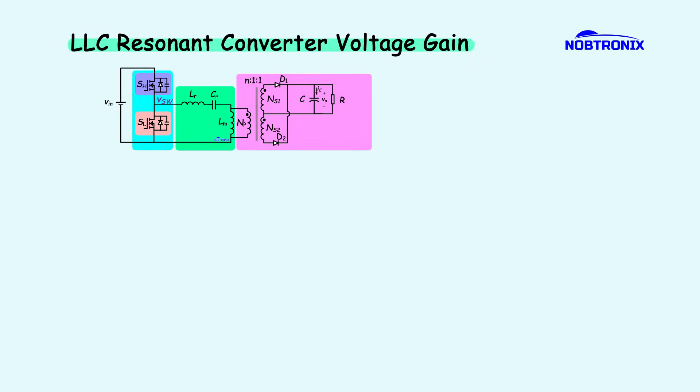Now that we've built the LLC resonant converter, let's analyze its operation and derive the relationship between the input and output voltage. The switching signals for the MOSFETs are shown here, operating with a 50% duty cycle. When the high-side switch is on, the voltage at the switching node equals VIN. Conversely, when the low-side switch is on, this voltage drops to zero.